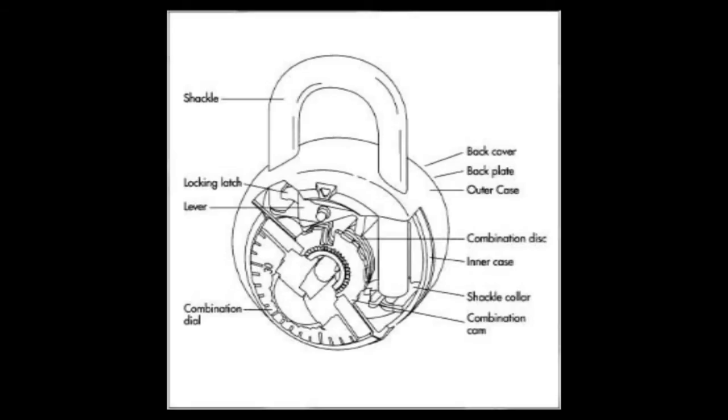Here's a quick diagram of the insides of a lock. The key components that we're looking at are the locking latch, the combination disc, the combination dial, and you can see the little slats that are at the very top part of the picture.